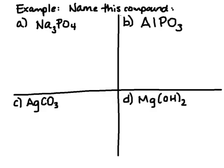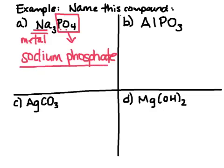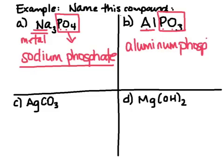I'm going to do these first two examples with you, then ask you to pause the video for the next two. Looking at NaPO4, I see three capitals, so there must be a polyatomic ion. PO4 is a polyatomic ion — looking on page 92, it is phosphate. NA from the periodic table is sodium. So the name is sodium phosphate. Next, AlPO3 has three capitals; PO3 is the polyatomic ion, and AL is aluminum from the periodic table. The name for this is aluminum phosphite. Now pause the video and try examples C and D on your own.